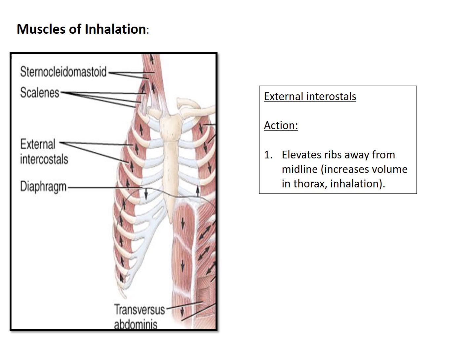The muscle in this image we want to focus on is the external intercostals. The action of this muscle is inhalation. More technically, this muscle elevates the ribs away from the midline, which effectively increases the volume in the thorax and allows inhalation to take place.